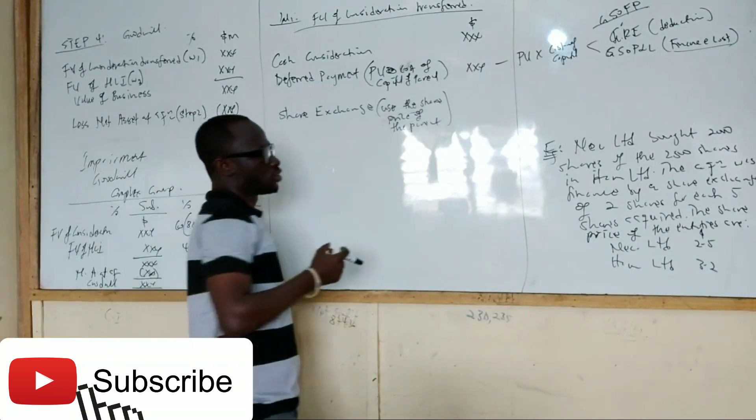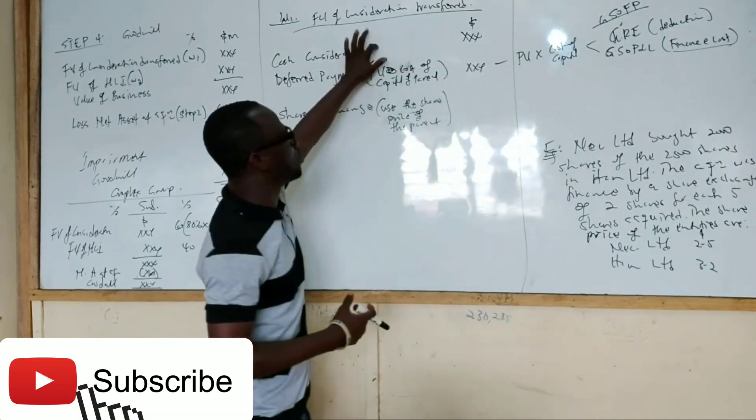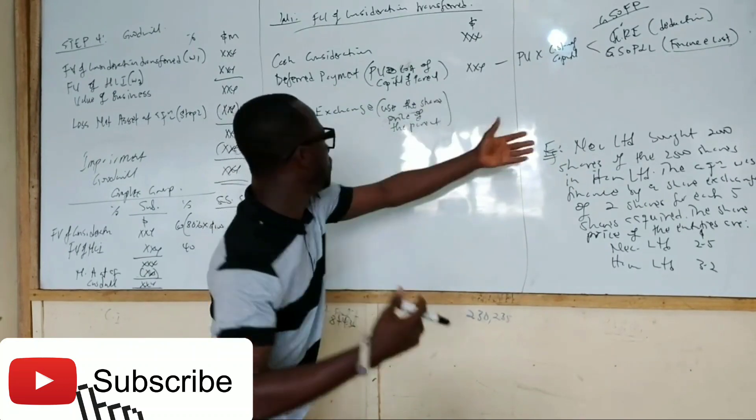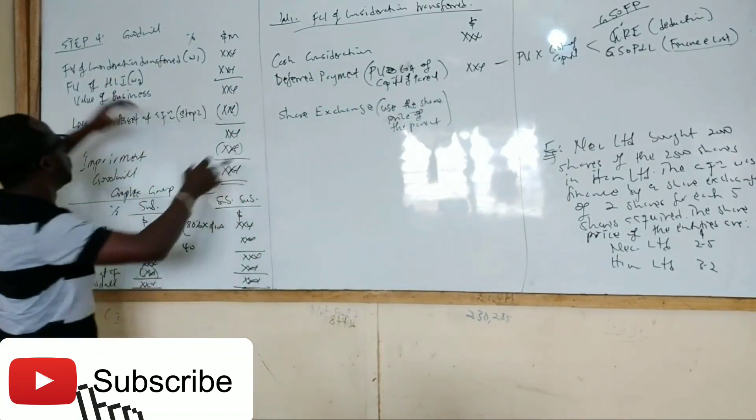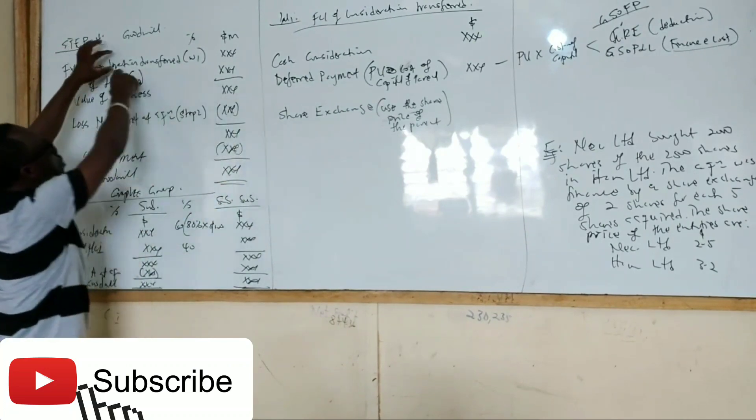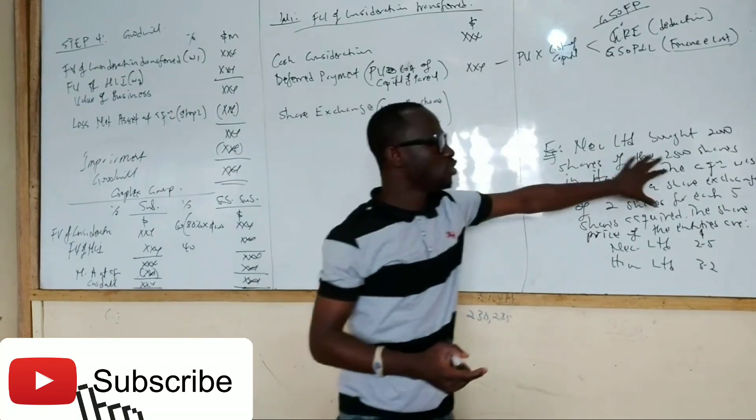Now, so what do I mean by that? If you see a question like this, there is no cash consideration. There is no deferred payment. But there is share exchange. Meaning that is what will come here as our consideration transfer. But how do you go about it?